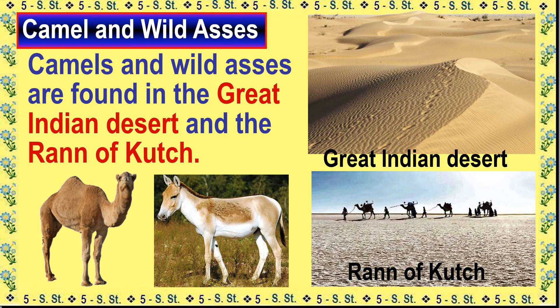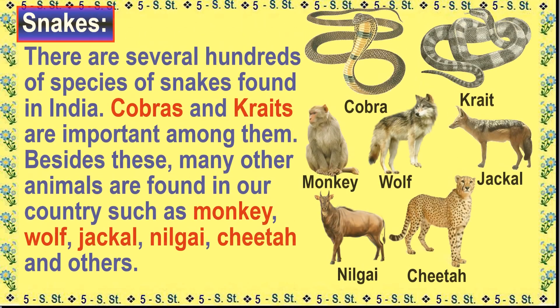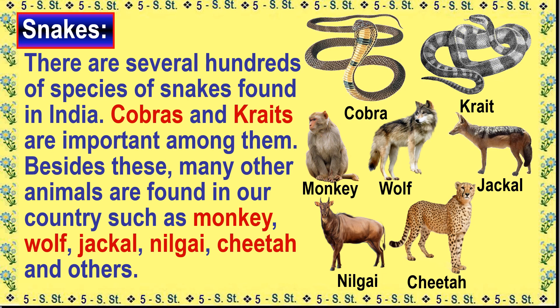Camels and wild asses are found in the Great Indian Desert and the Rann of Kutch. Wild goats, snow leopards and bears are found in the Himalayan region. There are several hundreds of species of snakes found in India; cobras and kraits are important among them. Besides these, many other animals are found in our country such as monkey, wolf, jackal, nilgai, cheetah and others.